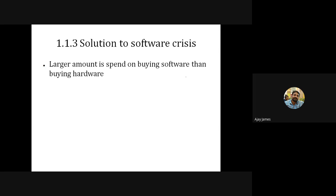Regarding the software crisis: in earlier days, hardware was the costlier thing compared to software — people developed really small software like calculators. Now it is the reverse: hardware cost is very low compared to software cost. If you want to develop a software, you may require millions of rupees, but buying hardware will cost much less. Large amounts are spent nowadays on buying software compared to hardware.